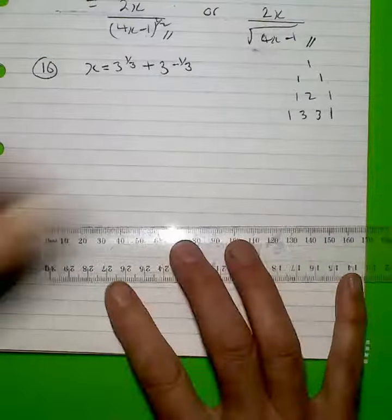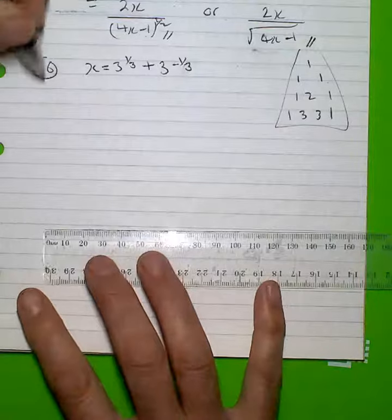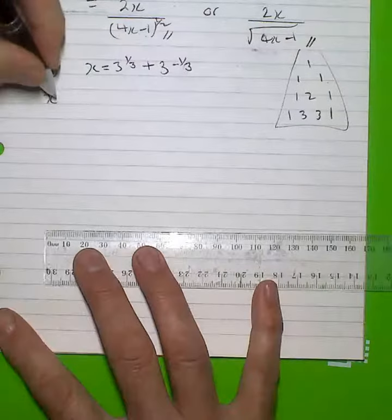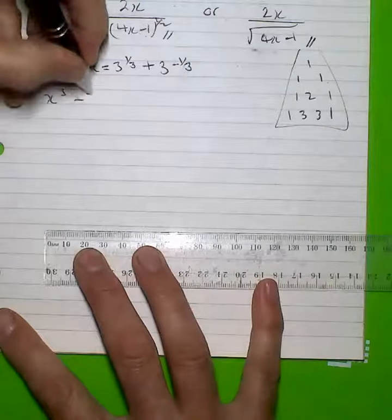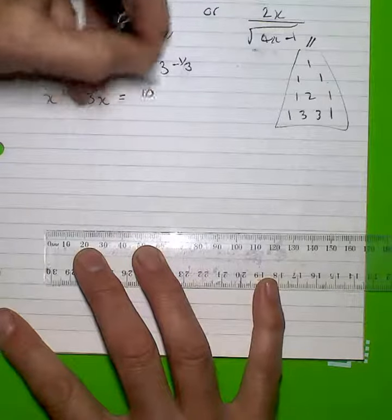Looking now at number 16, I'm going to have to make use of Pascal's triangle here. I have to show that x cubed minus 3x is equal to 10 over 3.